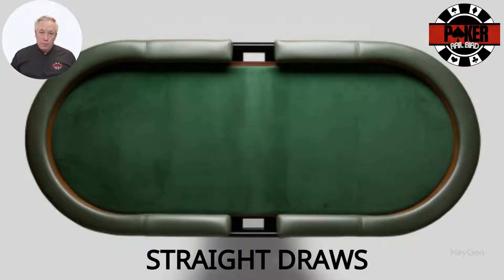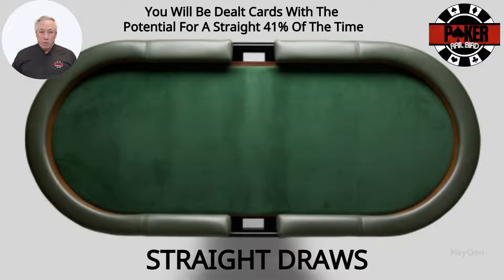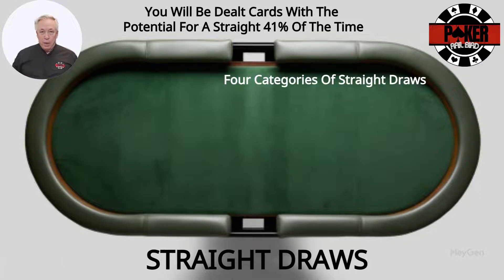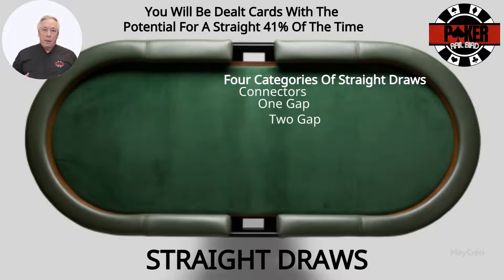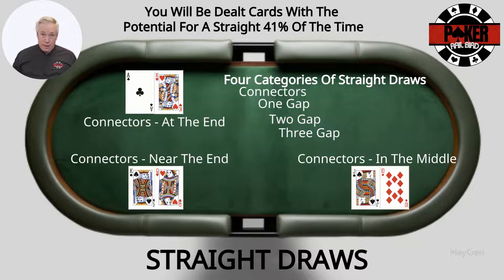How about straight draws? You'll be dealt cards that are not suited but have the potential to make a straight 41% of the time. However, straight draws are more complex than other types of hands. There are four main categories of straight draws: connectors, one gap, two gap, and three gap. Within each of these categories, there are three subcategories based on the position of the cards: at the end, near the end, and in the middle.